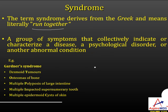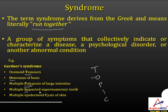Gardner syndrome can be remembered using the mnemonic TOPIC: T for desmoid Tumors, O for Osteomas, P for multiple Polyposis of the large intestine, I for multiple Impacted supernumerary teeth, and C for multiple epidermoid Cysts of the skin. This is an example of a syndrome.